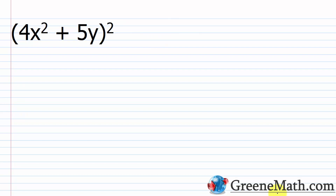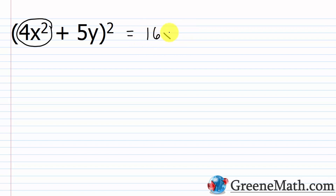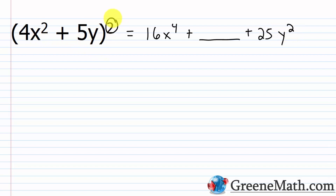Another example: 4x² plus 5y, this quantity squared. Square the first: 4x² squared — square the 4 to get 16, square x² to get x⁴ — giving 16x⁴. Square the last: 5y squared gives 25y². For the middle term: 2 times 4x² times 5y — 2 times 4 is 8, 8 times 5 is 40, giving 40x²y. So the answer is 16x⁴ plus 40x²y plus 25y².